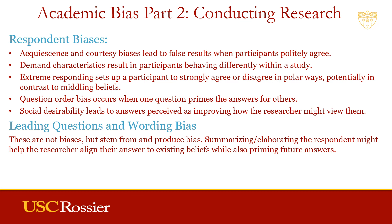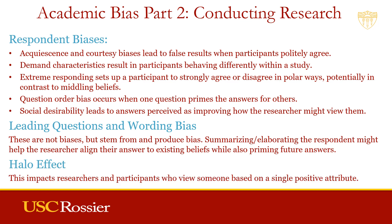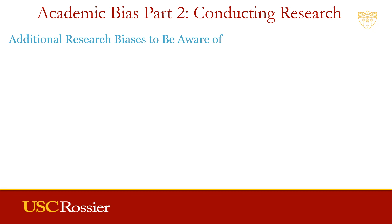The halo effect impacts both researchers and participants and generally revolves around one or more positive attributes. For example, the researcher and participant can find out that they both went to the same college. That would then change how they view and interact with each other. At this point in the presentation with all of these biases, it's expected to feel overwhelmed. And that's kind of the point. I want you to understand there are many biases at risk that are easily overlooked. Please learn to slow down, reflect, and then become more purposeful with your reading, research, and writing.